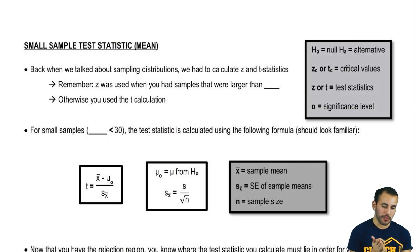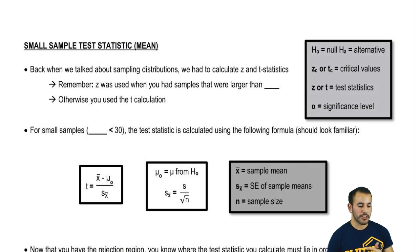Small sample test statistic for the mean. Back when we talked about sample distributions, a lot of this is kind of like a repeat but just with small samples. We had to calculate z and t statistics, and remember the z is when you had samples that were larger than 30. Otherwise, you use a t calculation.